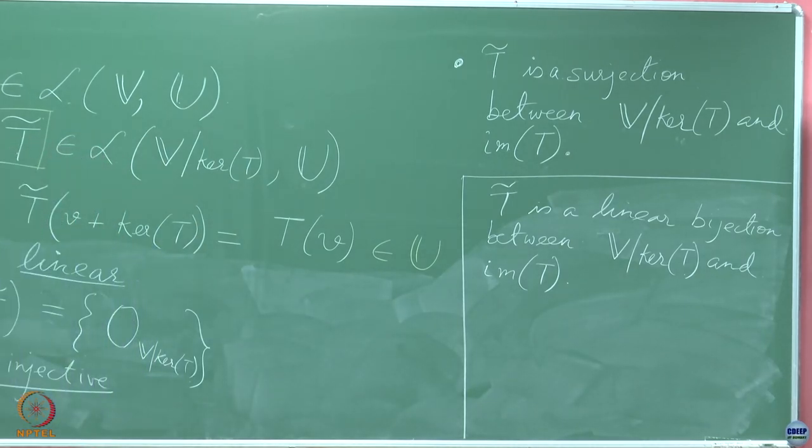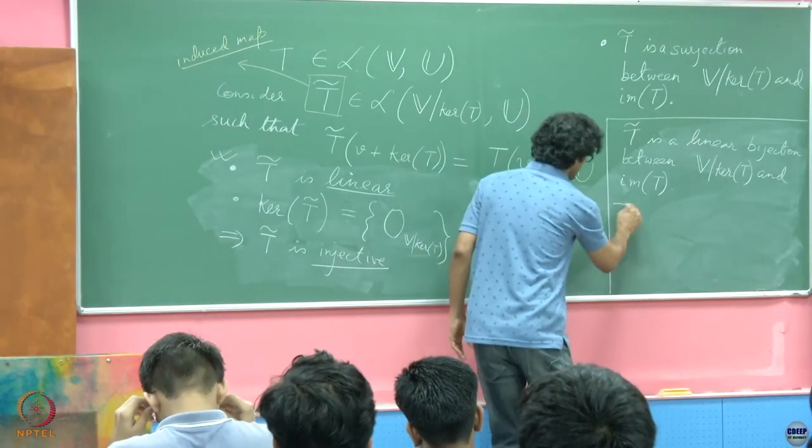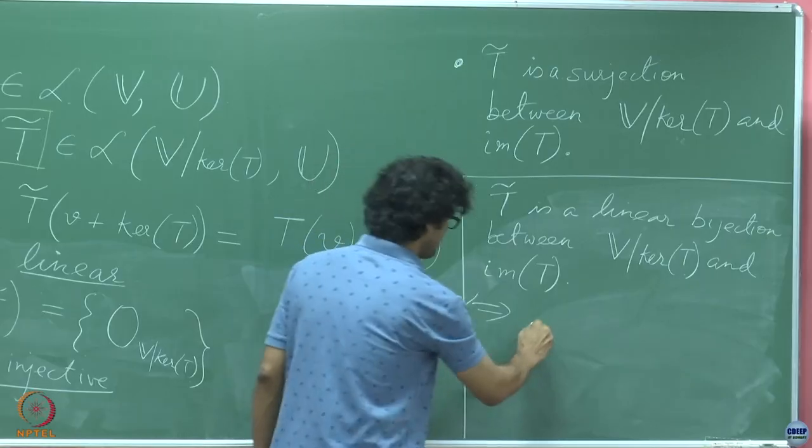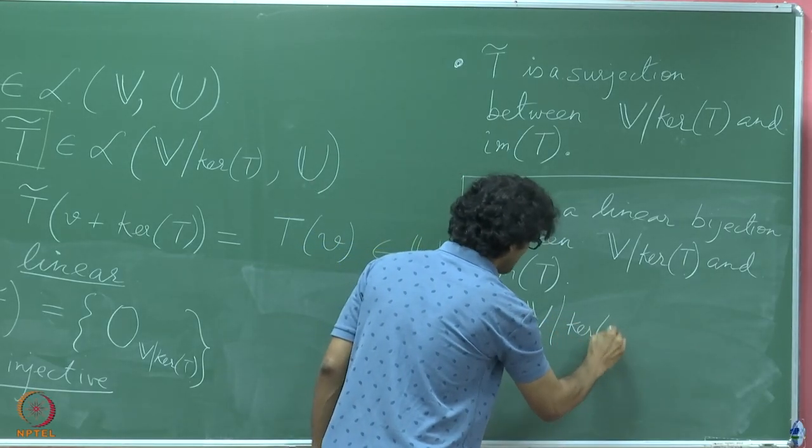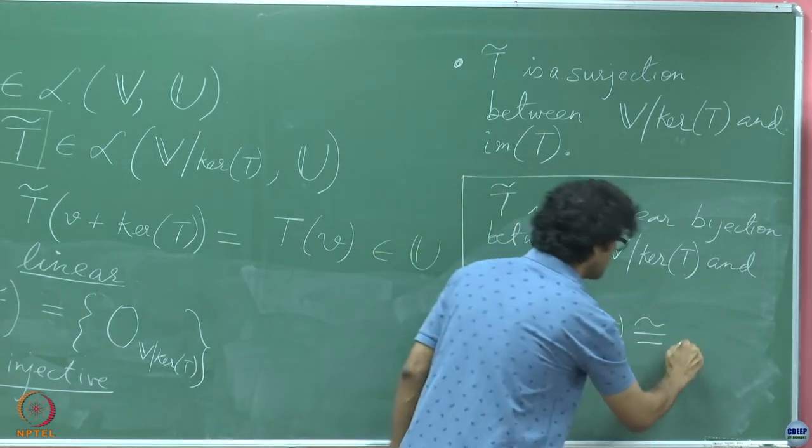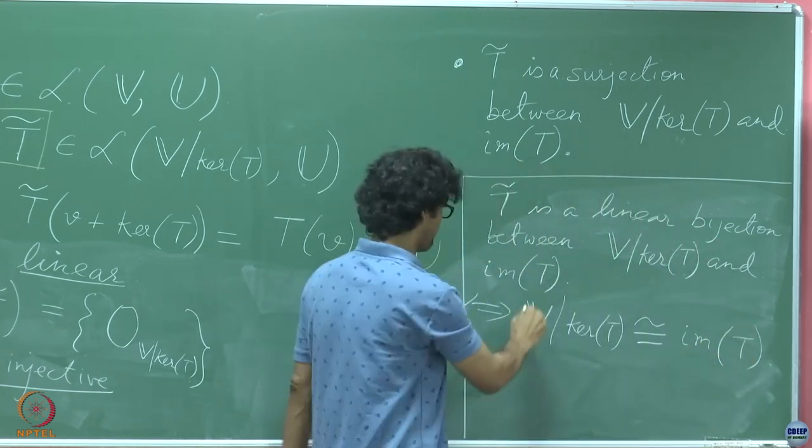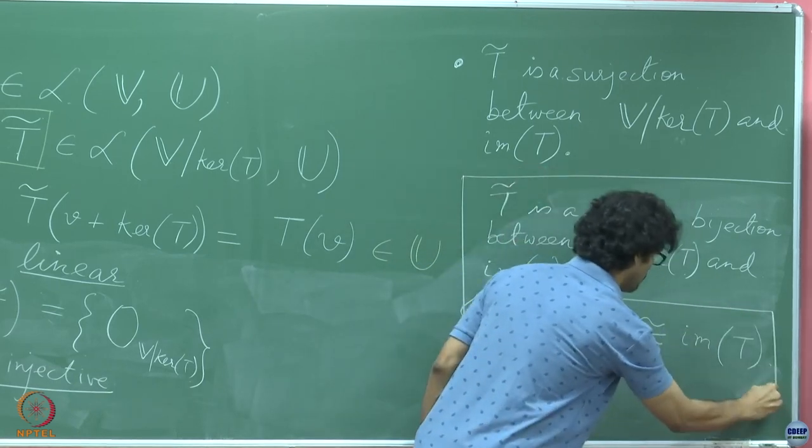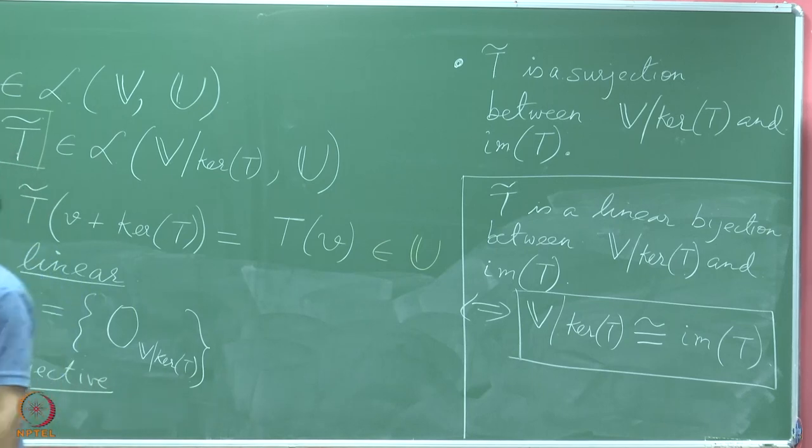T tilde is a linear bijection between V quotiented by kernel T and image of T. What do we have the moment we have a linear bijection like so? We have an isomorphism which means that, that is just another way of saying that V quotiented by kernel T is isomorphic with the image of T. What does this result remind you of? This is the first isomorphism theorem.